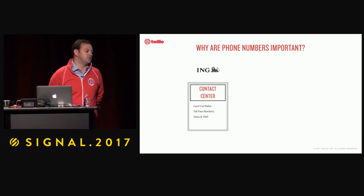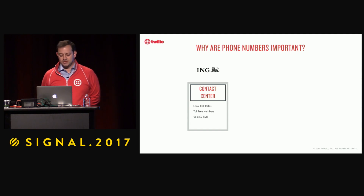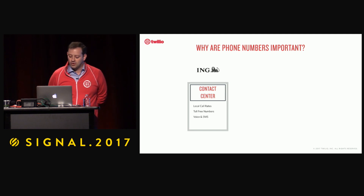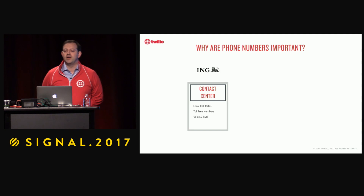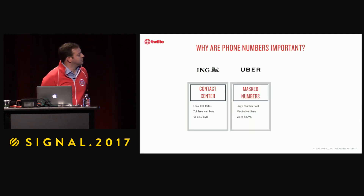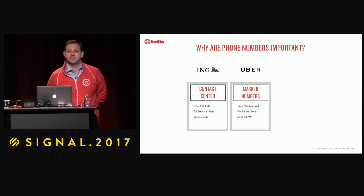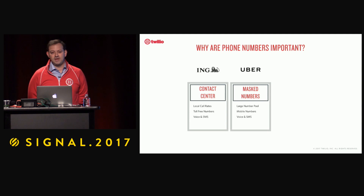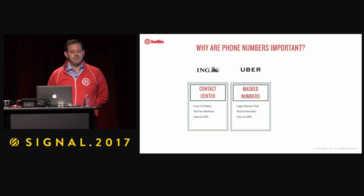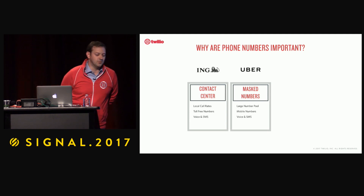Consider contact centers. ING uses Twilio to connect with their customers. What's important for them is that they are reachable, allowing their customers to reach them at local call rates or free with toll-free numbers. They're also interested in communicating over multiple channels, so they want numbers that can do both voice and SMS. Another common use case is mass numbers. Uber uses Twilio to anonymize communications between drivers and passengers, so it's about having large number pools and using them in a flexible way.